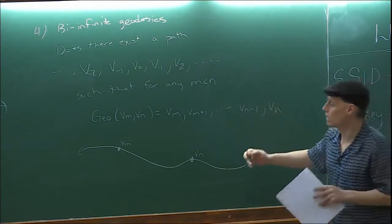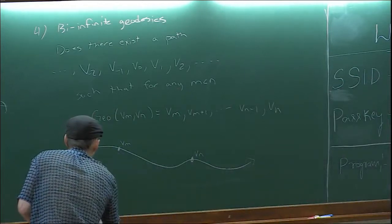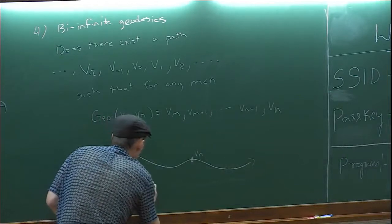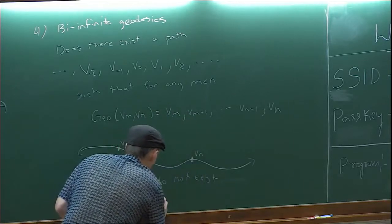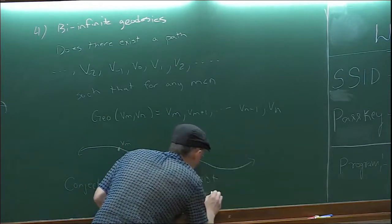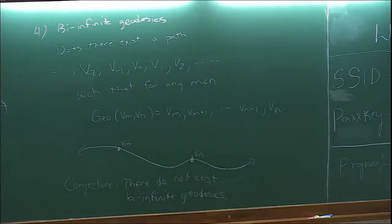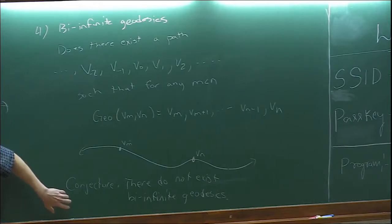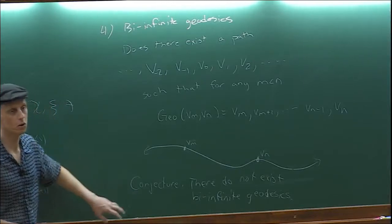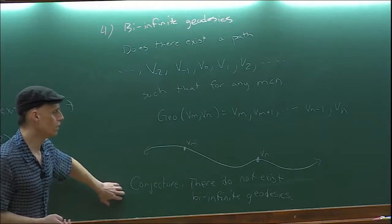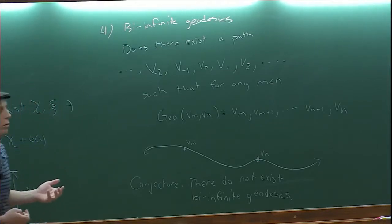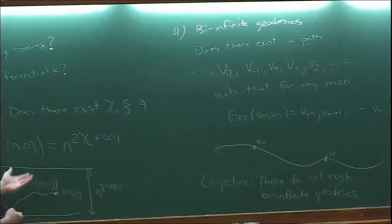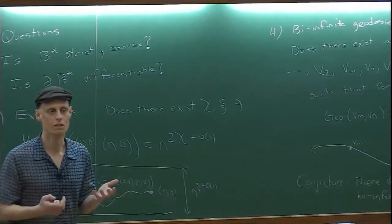The conjecture is: no — for any reasonable model, bi-infinite geodesics do not exist. My plan for the talk: first give a heuristic for why this conjecture should be true, then look at exactly solvable last passage percolation where we know much more, and then compare that with what we know for general first passage percolation.